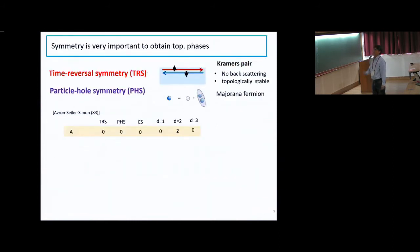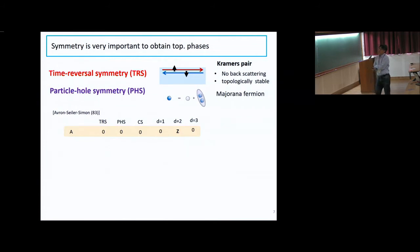Now I'd like to emphasize that to obtain such topological phases, symmetry is very important. For the realized topological insulators, time-reversal symmetry is very important. I consider the edge state for two-dimensional topological insulators. Because of time-reversal symmetry, the two states form Kramers pairs, so there is no backscattering between them even in the presence of disorder. Thus we have a topologically stable edge state protected by time-reversal symmetry.